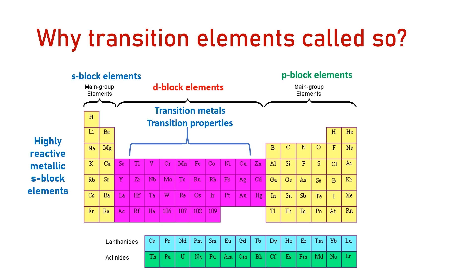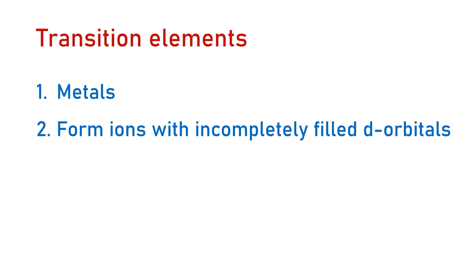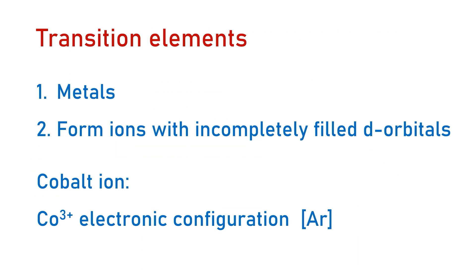They have transition properties between the highly reactive metallic elements of the S-block and the largely covalent elements of the P-block. Transition elements must have one or more stable ions in which the D orbitals are incompletely filled. For example, the cobalt-3 ion with the electron configuration argon 4s2 3d5 has half-filled D orbitals. That is why cobalt is considered to be a transition element.